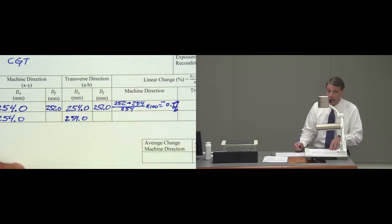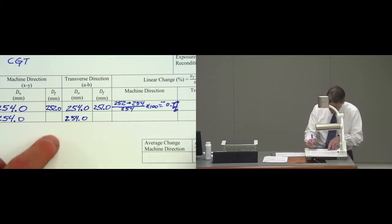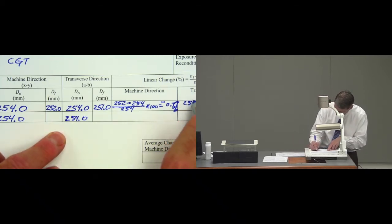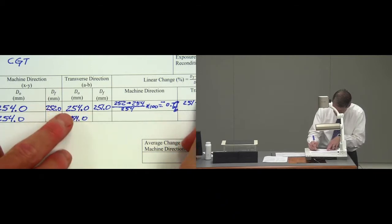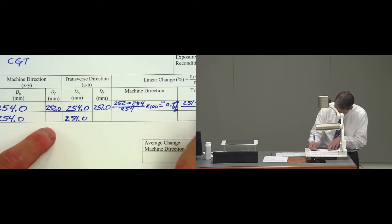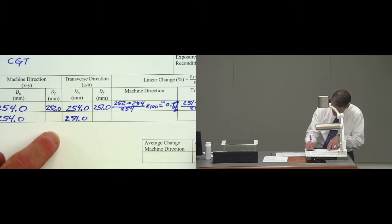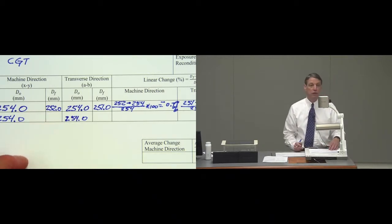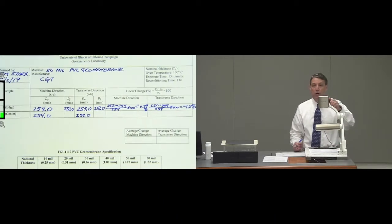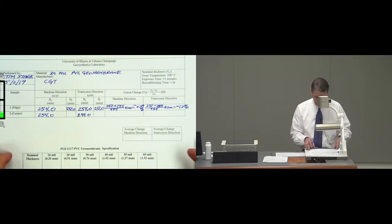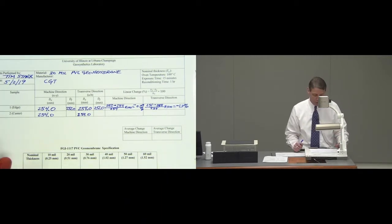In the transverse direction it's 251 minus 254 divided by the initial 254 times 100 and that gives me minus 1.2 percent. Again minus because it decreased in linear dimension.